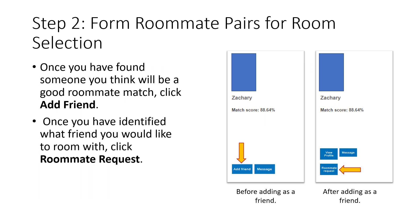Once you have found someone you think will be a good roommate match, you can add them as a friend. To do this, click Add Friend at the bottom of their profile. You should continue communications with the friends you have added to determine if they will be a good roommate for you. Once you have identified the friend you would like to room with, you can click Roommate Request at the bottom of their profile. You cannot send a roommate request without being someone's friend.